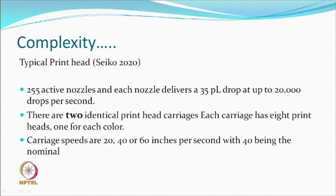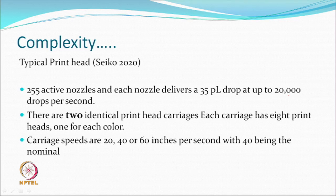As an example of complexity, a typical print head such as the SECO 2020 has something like 255 active nozzles — total nozzles may be more, but shared-wall designs mean not all fire simultaneously. Drop size delivery can be 35 picoliters, with a drop frequency up to 20,000 drops per second. There can be identical print head carriages: instead of one carriage, you can have two carriages, each with eight print heads, one per color.